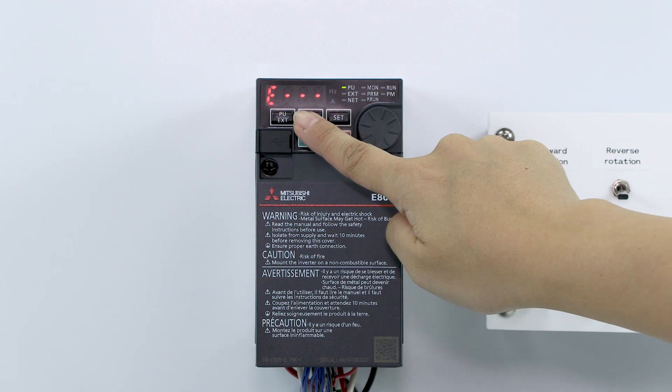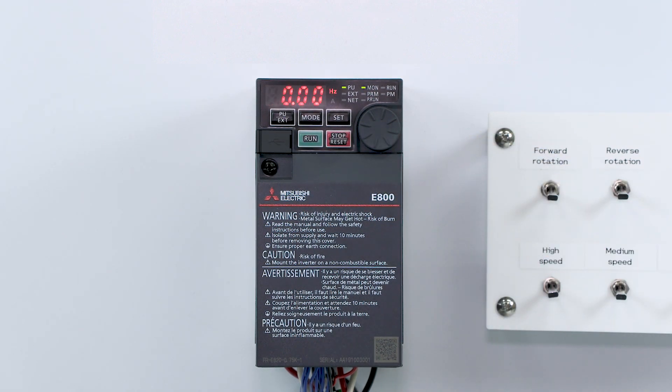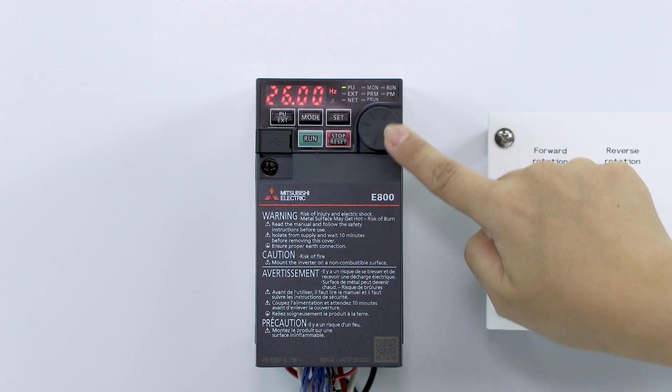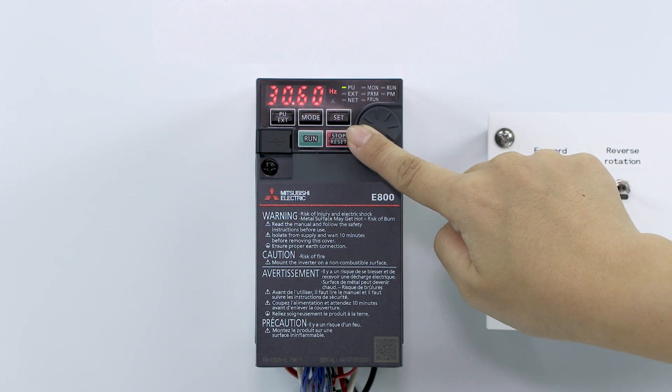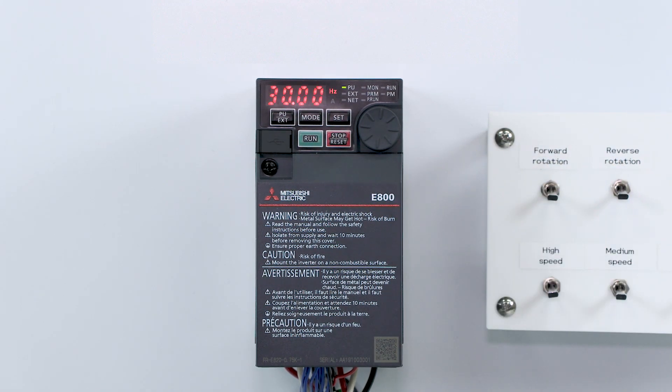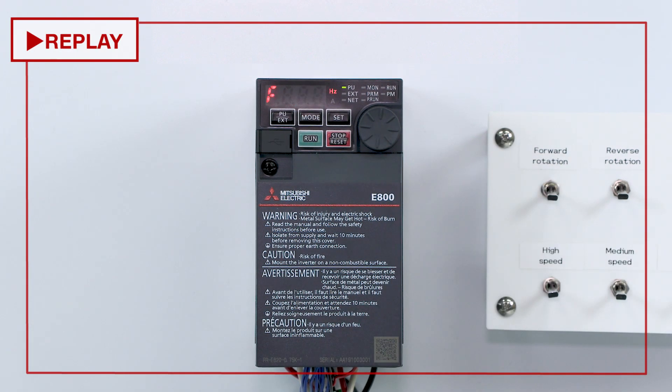Next, set the frequency to 30 Hz. Turn the dial until it displays 30 Hz. The display will flash for about 5 seconds. Press the SET key while the display is flashing. F and 30 will flash alternately. After flashing for about 3 seconds, the display will return to 0.